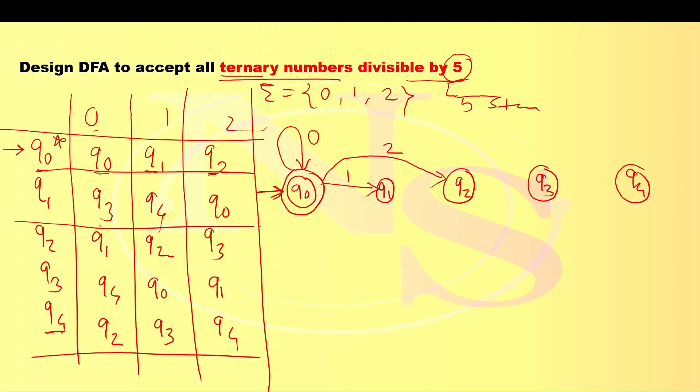Now, next row. Q1 going to Q3 for symbol 0, Q1 going to Q4 for symbol 1, then Q1 going to Q0 for symbol 2. Second row is completed.